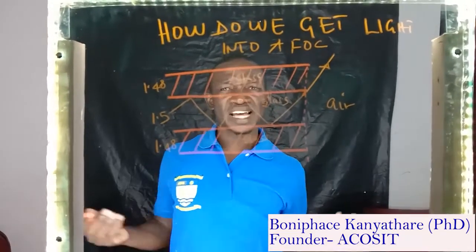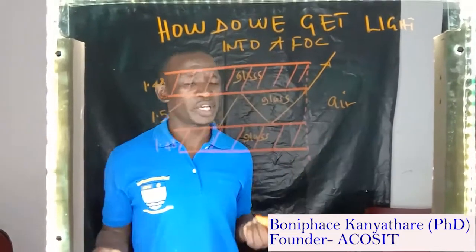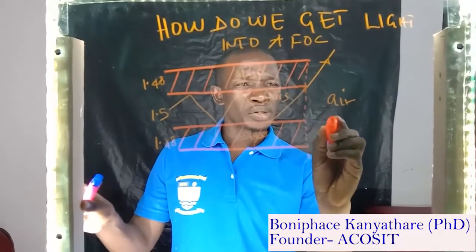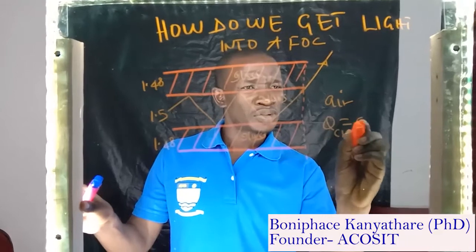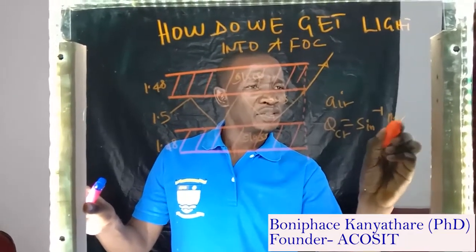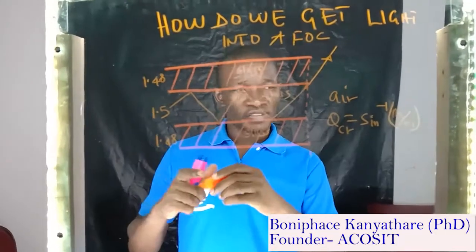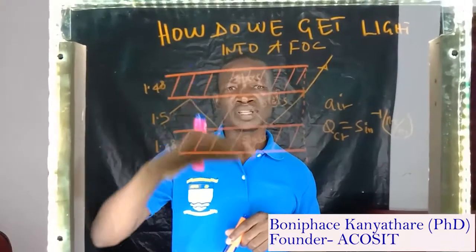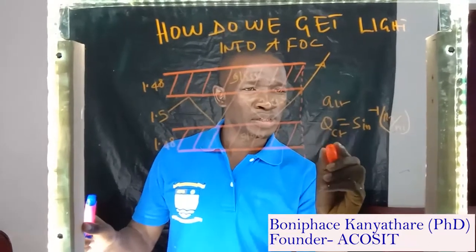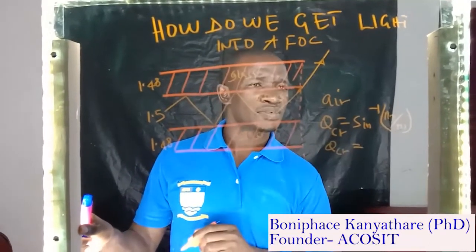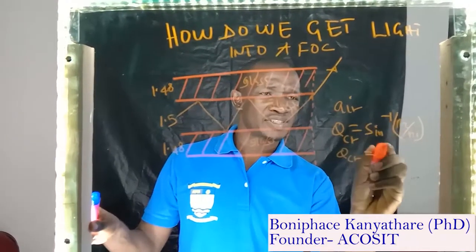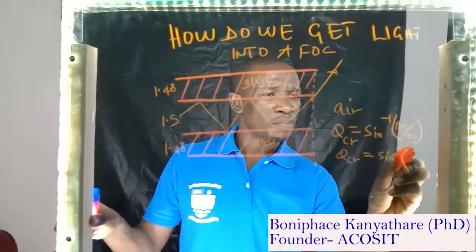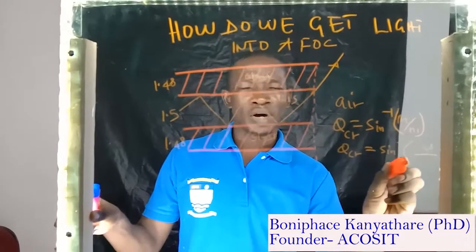How do we achieve that? We discussed previously about critical angle, and we said to get the critical angle, our formula is: critical angle equals sine inverse of N2 divided by N1 — where N2 is the refractive index of cladding and N1 is the refractive index of core. So if we want to assume we are talking about this kind of system, our critical angle here would be sine inverse of 1.48 over 1.5.